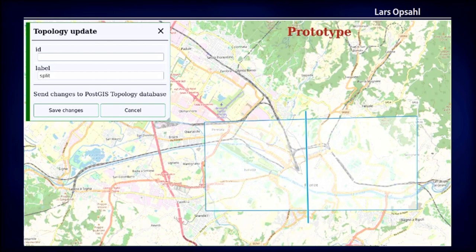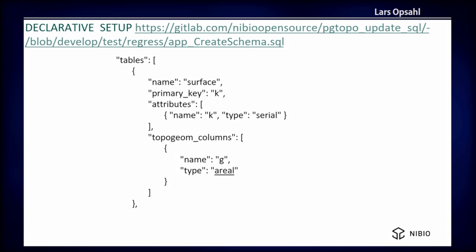The user interface is as simple as this: you have a base map — in this case OpenStreetMap — and you can draw lines defining new geometry, for example the big rectangle in blue. You can also modify existing geometries: with one line we split an existing rectangle in two and assign some attributes to it.